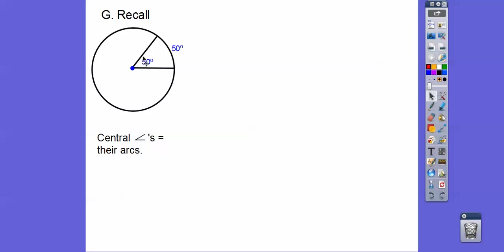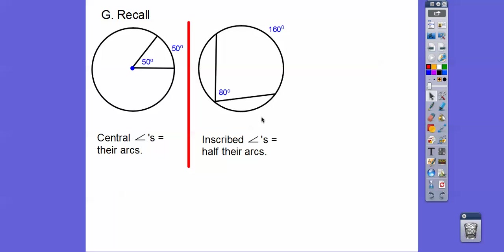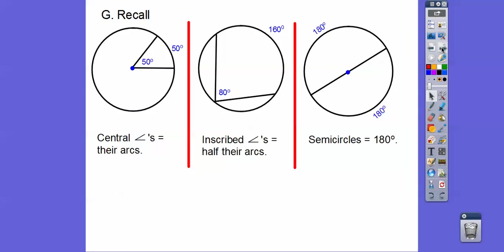Remember, central angles are the same as their arcs right there. Inscribed angles are half of their arc. So whatever that is, take half, and that's what that is right there. If the vertex is on the circle, it's always half that arc, and semicircles are 180.